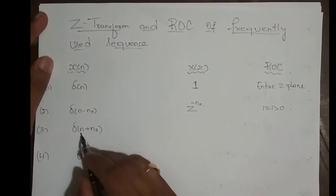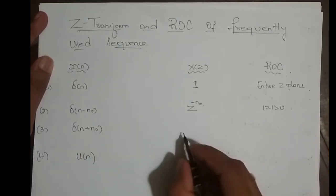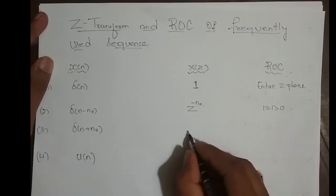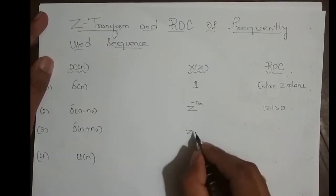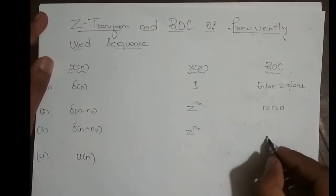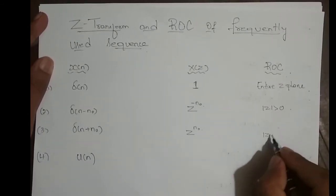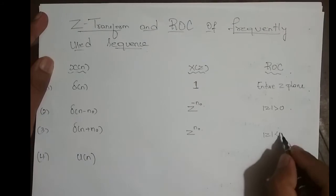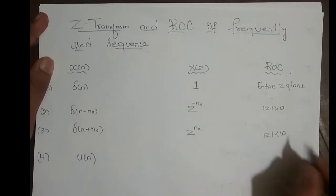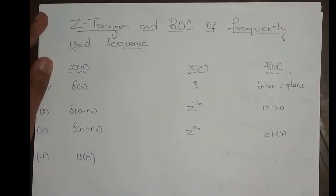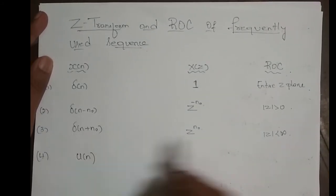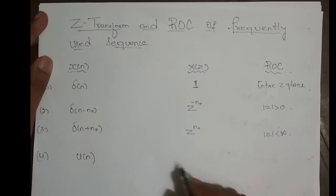This is delta(n) shifted left by n₀, so its Z-transform is z^(n₀) and its ROC is magnitude of z less than infinity. We derived this before — you can look at those videos if needed.